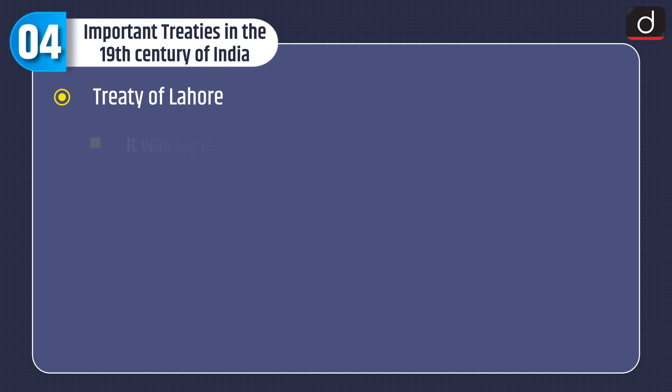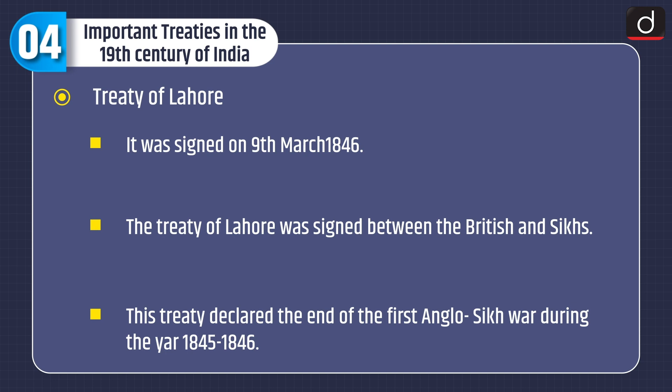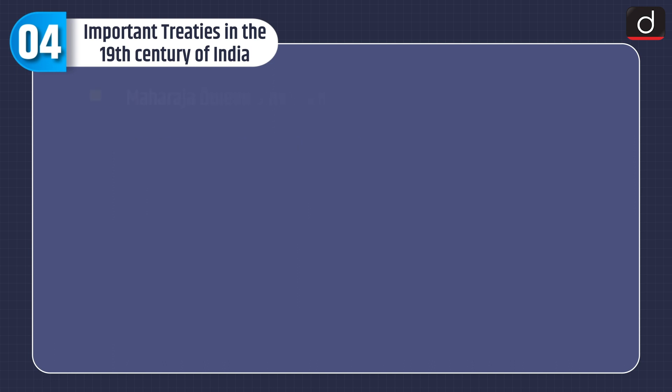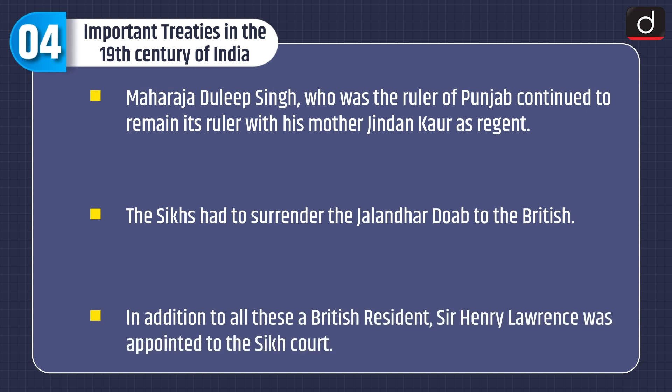Treaty of Lahore. It was signed on 9 March 1846 between the British and the Sikhs. This treaty declared the end of the First Anglo-Sikh War during 1845 to 1846. Maharaja Duleep Singh, who was the ruler of Punjab, continued to remain its ruler with his mother, Jindan Kaur, as regent. The Sikhs had to surrender Jalandhar Doab to the British. In addition, a British resident, Sir Henry Lawrence, was appointed to the Sikh court.